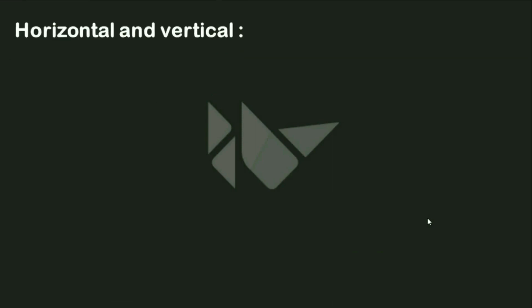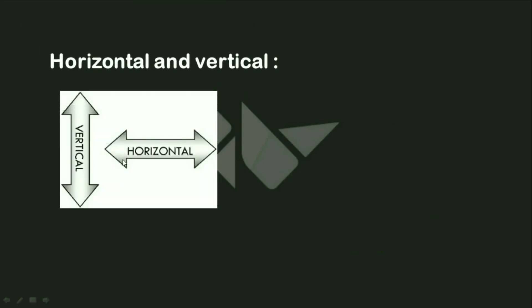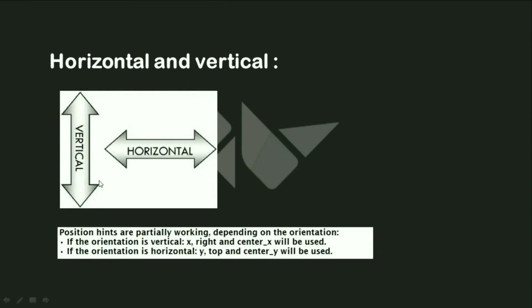Today we will speak about two things that people are getting confused between all the time, which are the horizontal and the vertical. Horizontal goes by the width and the vertical goes by the height. We use both of those values using the orientation, so if I want something to be in my window in the horizontal or vertical way, we use the orientation.